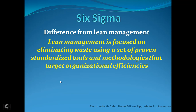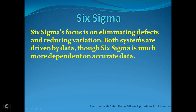Six Sigma and lean management are related but different. Lean management focuses on eliminating waste using proven standardized tools and methodology. Six Sigma focuses on eliminating defects and reducing variations. Both systems are driven by data rather than guesswork, but Six Sigma is much more dependent on accurate data.